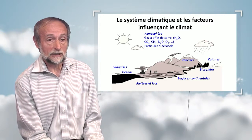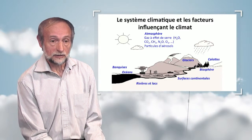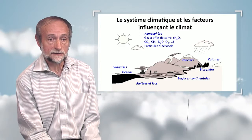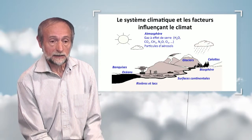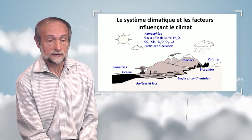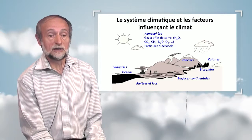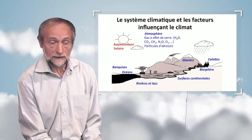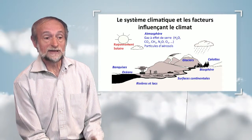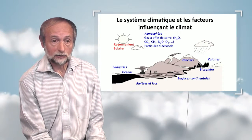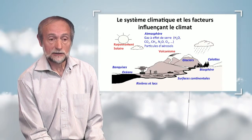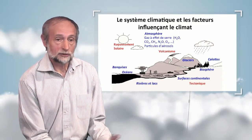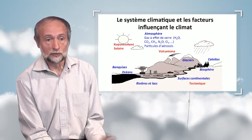This is what we call internal variability of the climate, because there are interactions connected with the internal variability of the climate. The climate also evolves based on external factors, such as solar variability, volcanic activity, and tectonics at a much longer timescale, obviously.